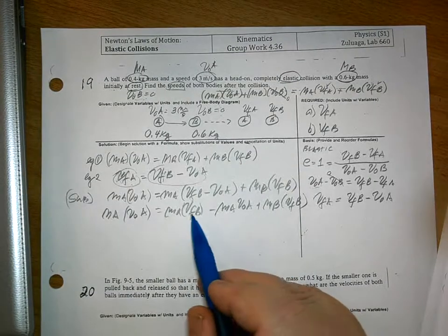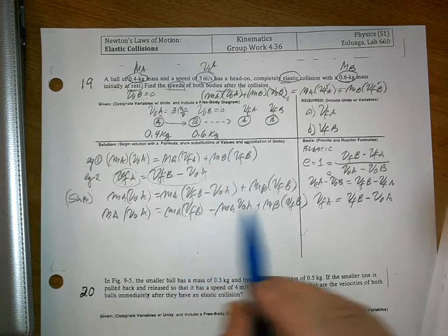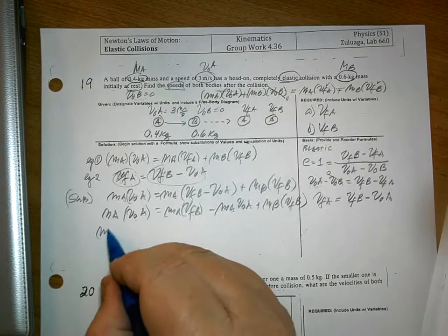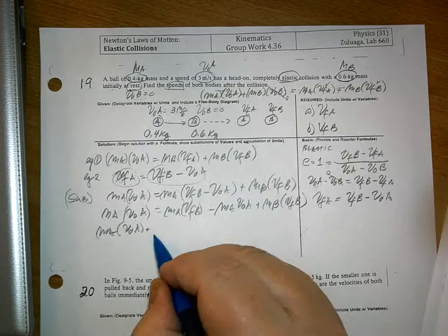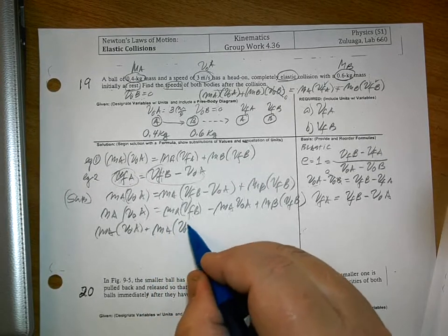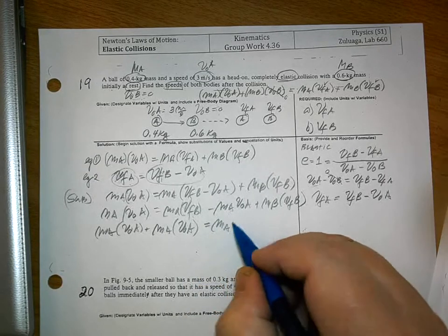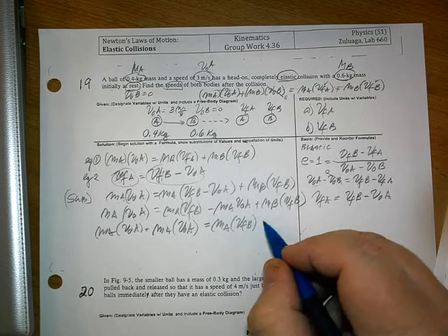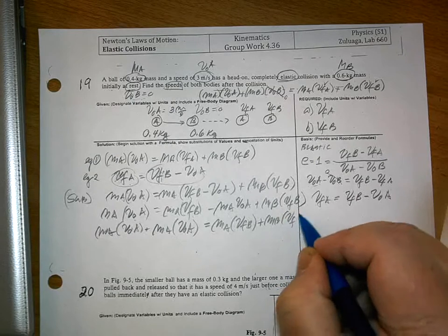Combining like terms. Remember that this is known, this is unknown. So, we're going to combine this one and that one, and then this one, we're going to put over here. So you have MA VOA plus MA VOA is equal to MA VFB plus MB VFB.